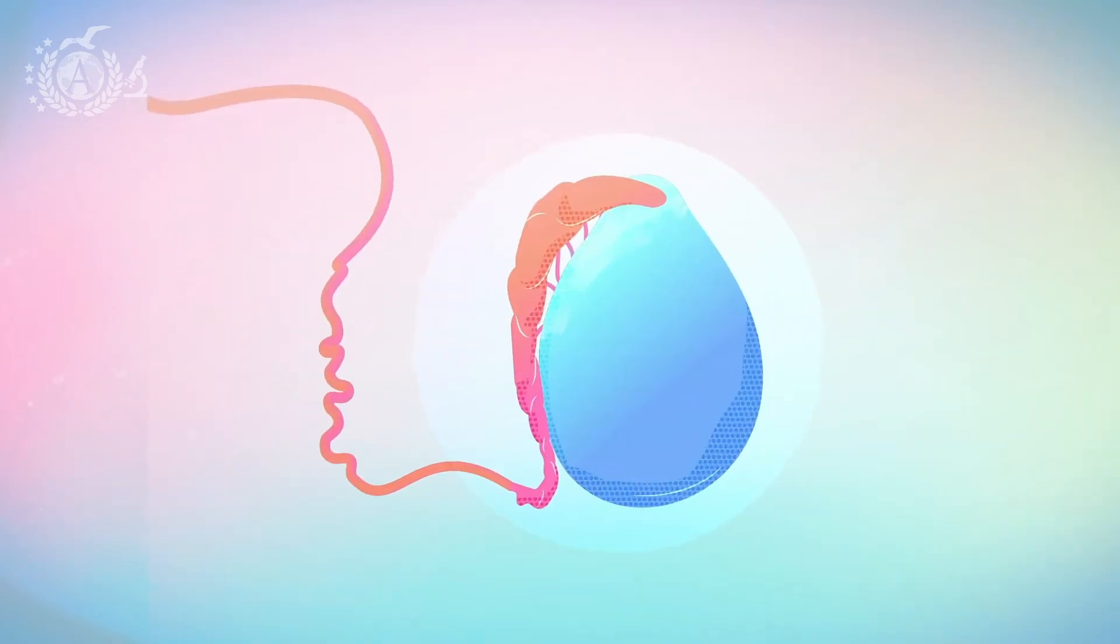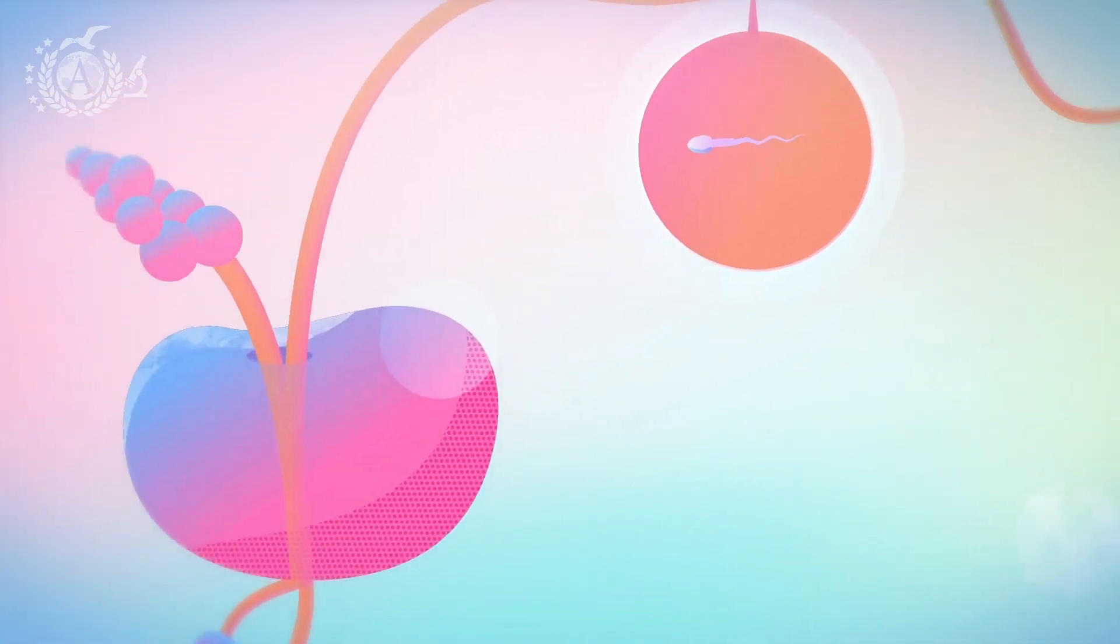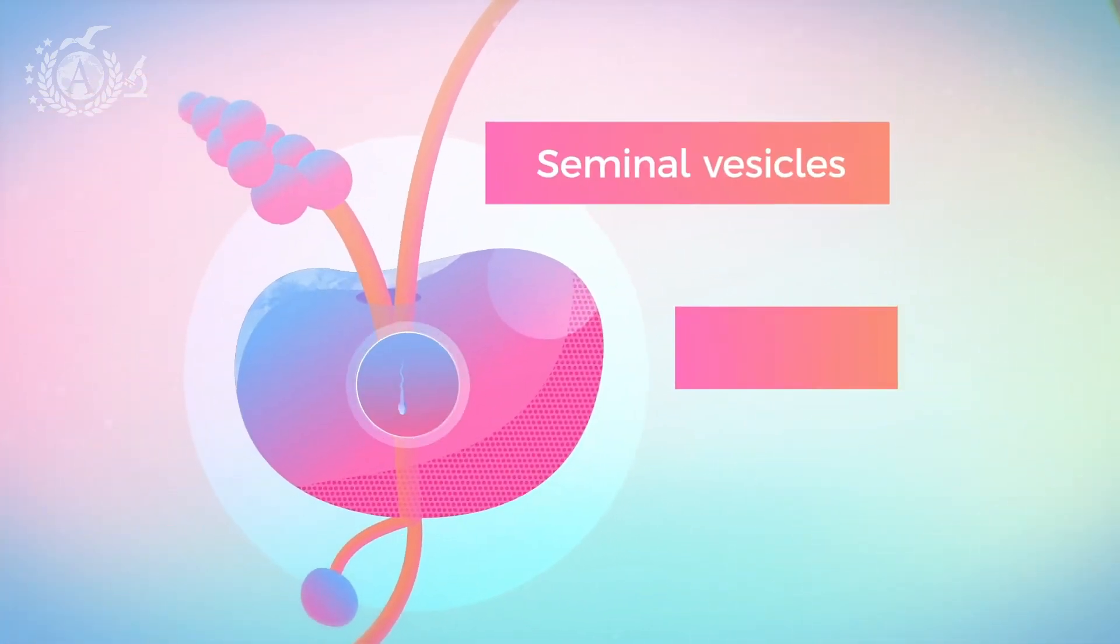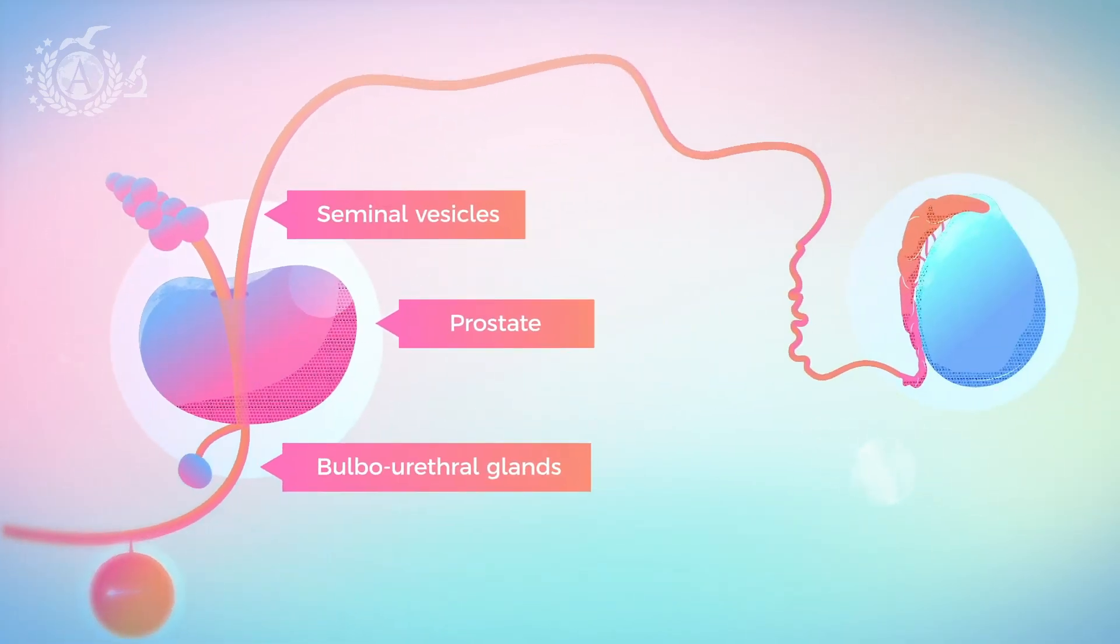From the tail, through the ductus deferens, they reach the prostate, where they join the material of the seminal vesicles, and are then transported outside through the urethra, so from prostatic to spongy.